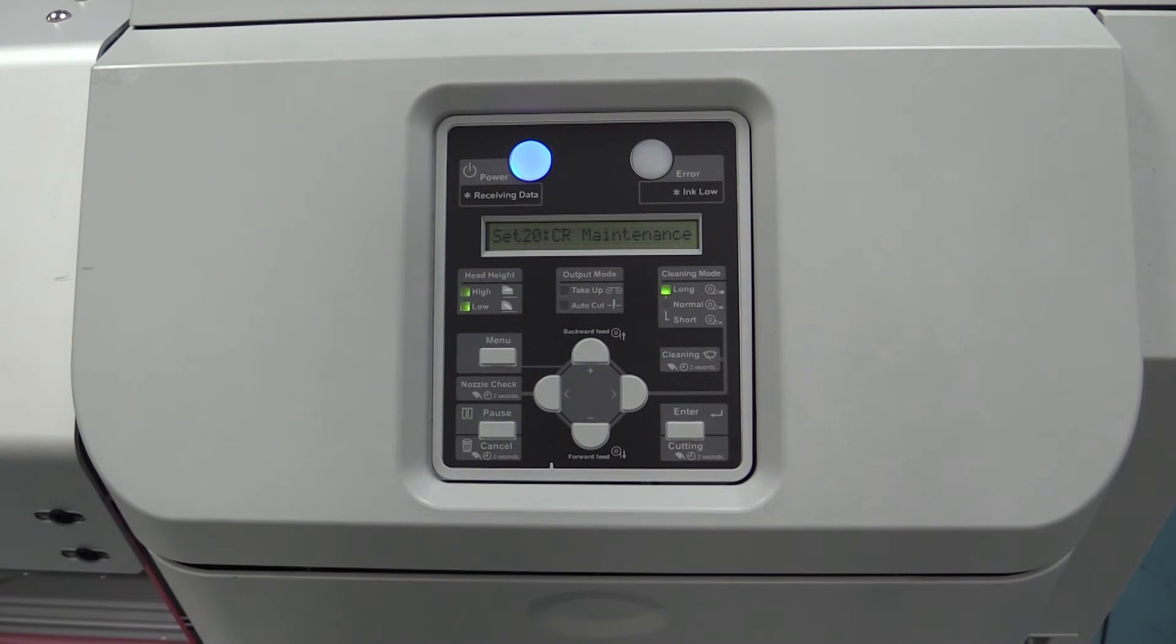Setting 20 is CR maintenance. We go into this in more detail in the TrafficJet maintenance video. This allows you to shift the print head from the right side of the machine all the way to the left so that you can access your maintenance station and wiper, and also clean around the print head itself.